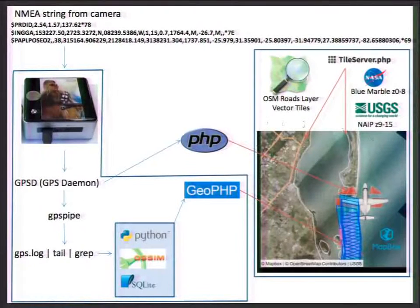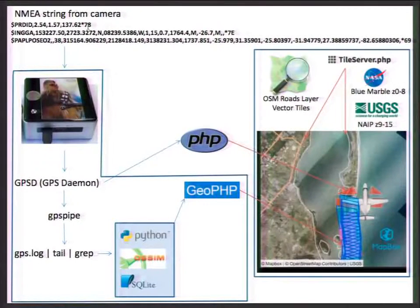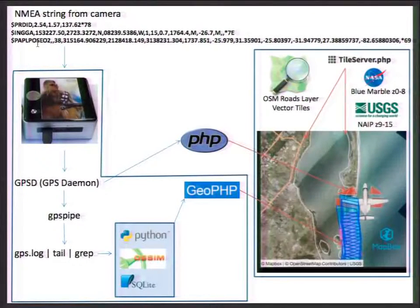There are three main software pieces. For anyone familiar with NMEA strings — GPS strings — this is what's streaming off the camera. The first string is the pitch, roll, and heading of the camera — where the camera sees itself positioned in space. The second string is the latitude, longitude, and altitude. And then the POSPOPAZIO string is where the camera thinks it is pointing and where it thinks it is.